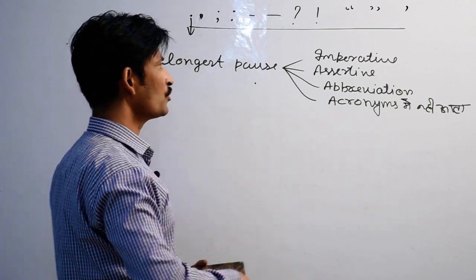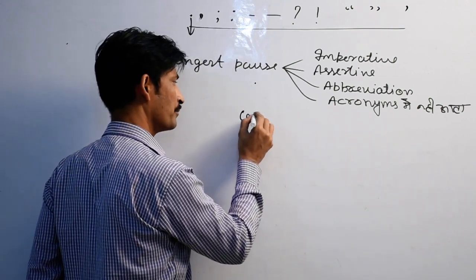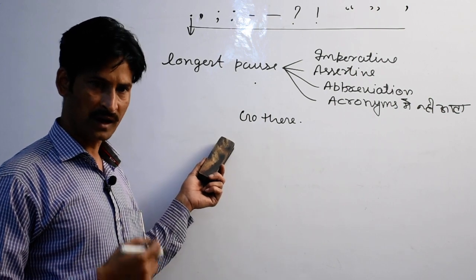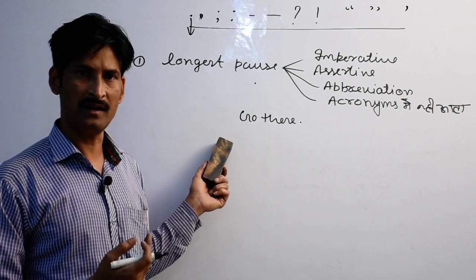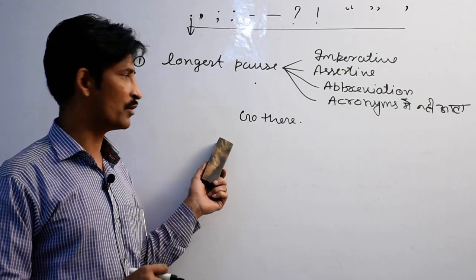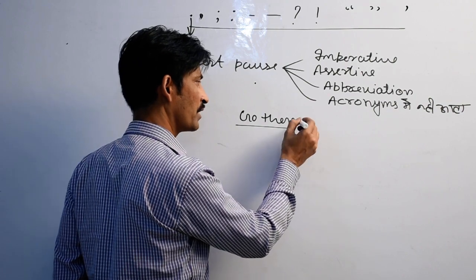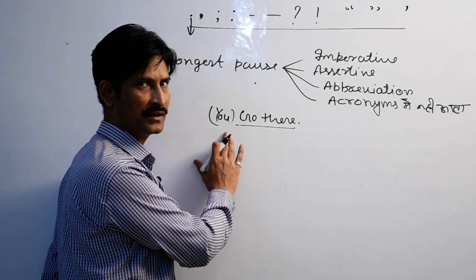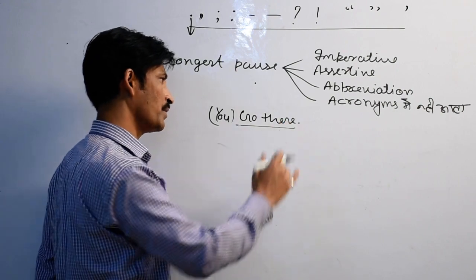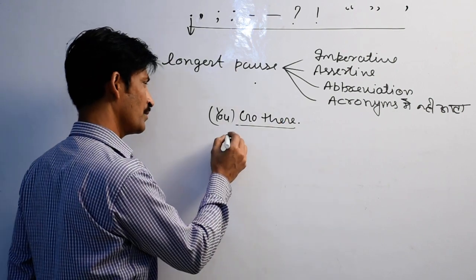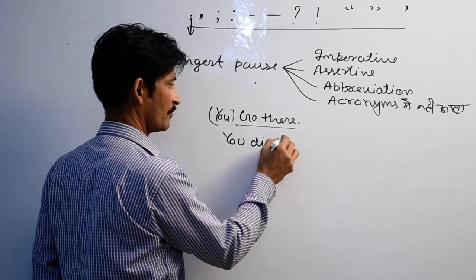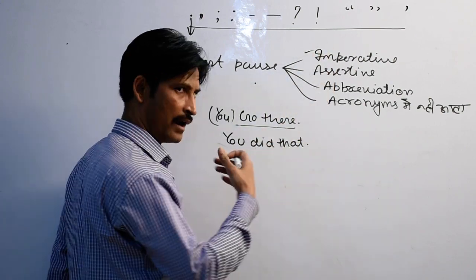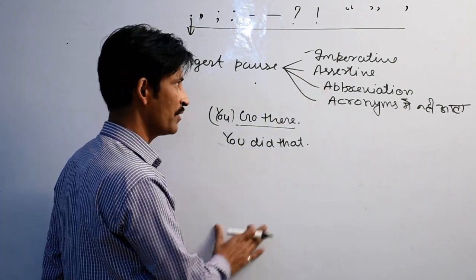If there is an imperative sentence, for example 'Go there' — we know that imperative sentences use the common subject 'you' and are made in present indefinite, said to the person in front. So 'Go there' is a complete sentence and a full stop is placed here. And if we write an assertive sentence like 'You did that,' we will put a full stop again. So for imperative sentences we put a full stop, and for assertive sentences we put a full stop.